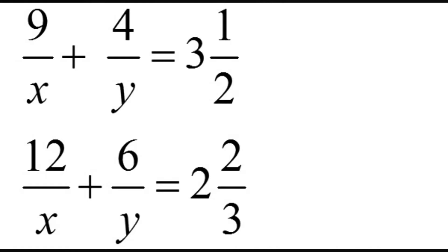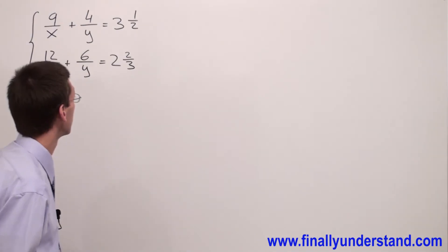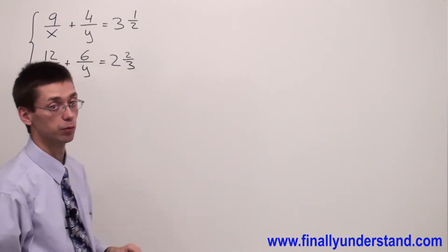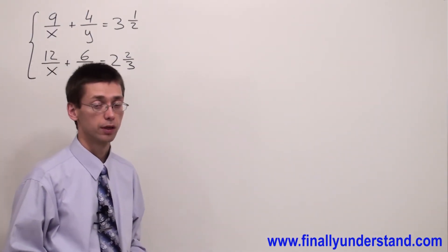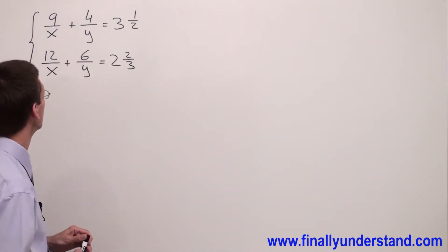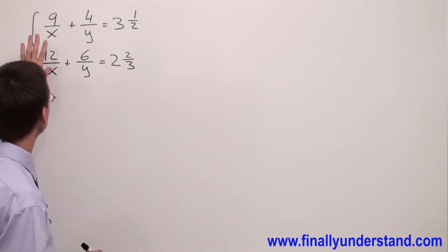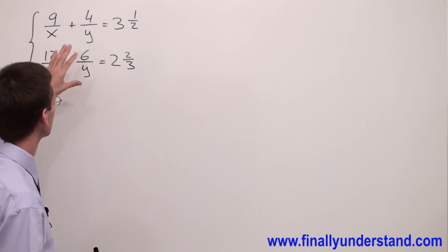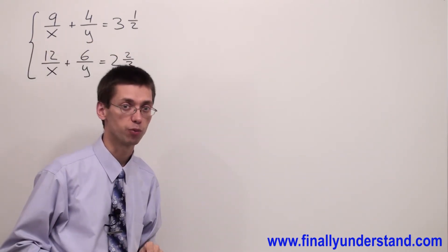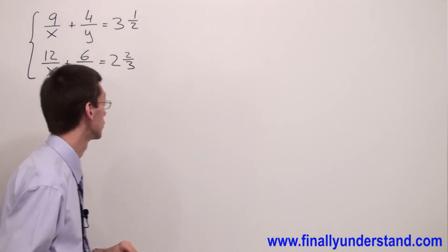We have another example on the board. Again, we're supposed to find values of x and y. This time we have mixed numbers. Please notice that on the left side of each equation we have fractions. That's why we are going to convert mixed numbers to improper fractions first.